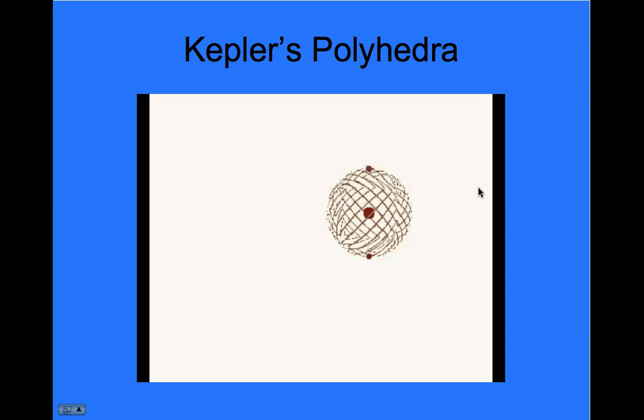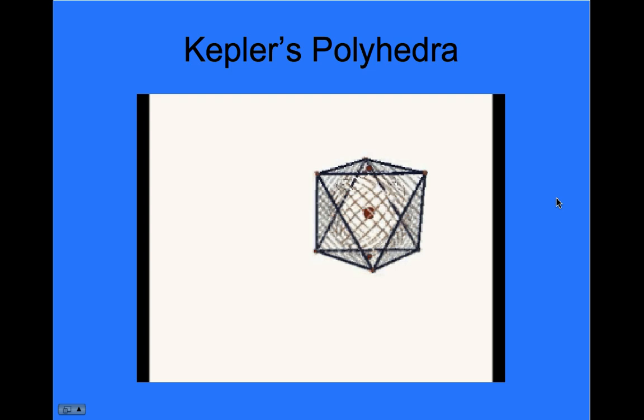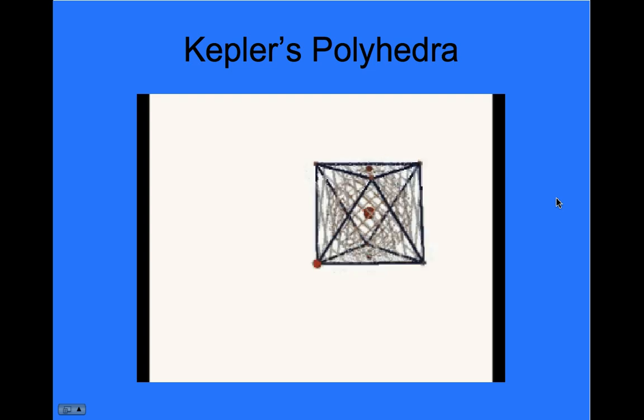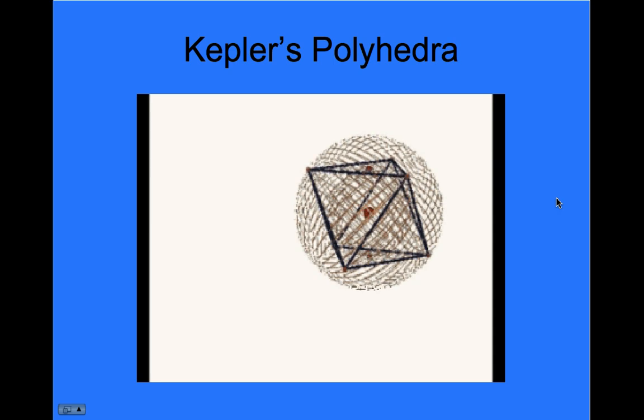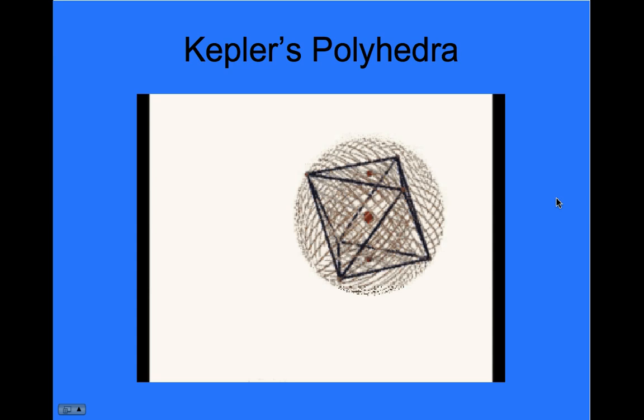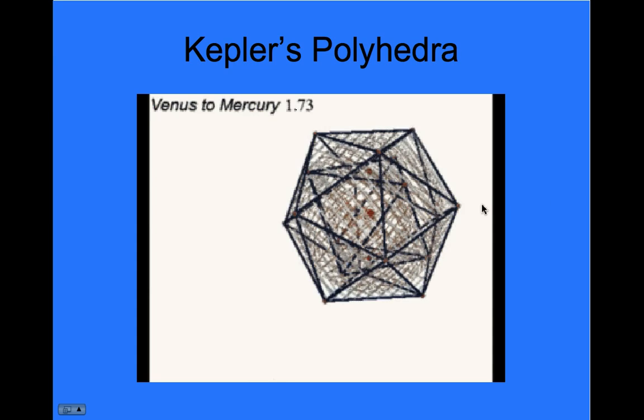Let's take a look. Here's Mercury's orbit, and circumscribed around Mercury's orbit is an octahedron. Rotating there, this was made with Cabri 3D. Put a sphere around the octahedron, and when we calculate the ratios of those two spheres, we get 1.73, which is pretty close to the ratios of the size of the orbits of Venus to Mercury.